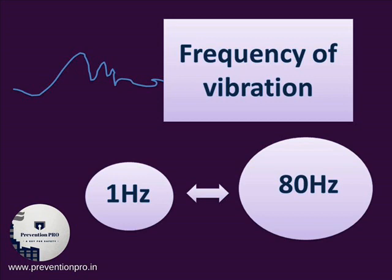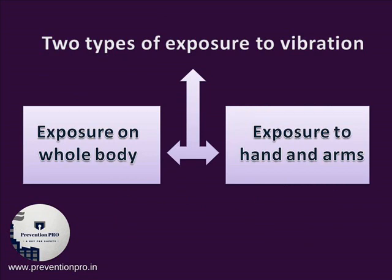The human body is more sensitive to vibration in the frequency range between 1 to 80 hertz. There are two types of exposure to vibration: effects of exposure on the whole body, and hand-arm vibration.